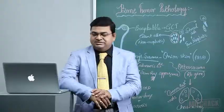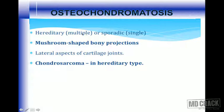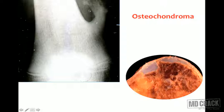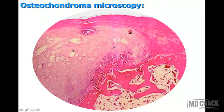Osteochondromatosis, commonly called exostosis, can be single or multiple — multiple cases suggest hereditary causes with associated anomalies. It is a mushroom-shaped bony projection usually seen over the lateral aspect of cartilaginous joints, growing towards the growing end of the bone. Rarely it can give rise to the malignant counterpart, chondrosarcoma. Grossly it appears as a bony outgrowth covered by a cartilaginous cap; microscopically we see bone with medullary fat and the cartilaginous cap.